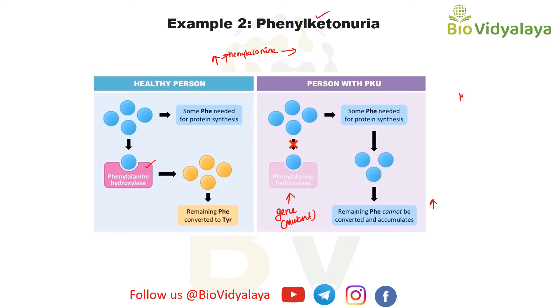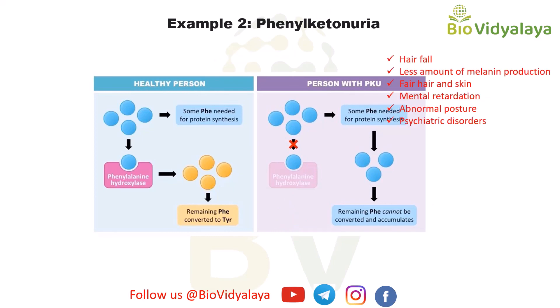This accumulation causes hair fall and less melanin production, because tyrosine is responsible for melanin production — if tyrosine is not synthesized, melanin will not be produced. As a result, there is fair hair color, fair skin color, mental retardation, abnormal posture, skin rashes, and psychotic disorders. So, because of this one gene mutation, all these abnormalities occur. In the case of pleiotropy, one gene is responsible for more than one trait or more than one character.